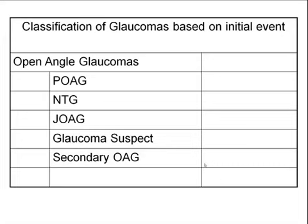There are different classification systems for glaucoma based on the initial event. Open-angle glaucomas can be subcategorized as POAG, NTG or normal tension glaucoma, JOAG or juvenile open-angle glaucoma, glaucoma suspect, and secondary open-angle glaucoma. POAG would be defined as individuals with elevated eye pressure and clinical signs of a glaucomatous optic neuropathy, but without any obvious secondary pathology causing the problem.